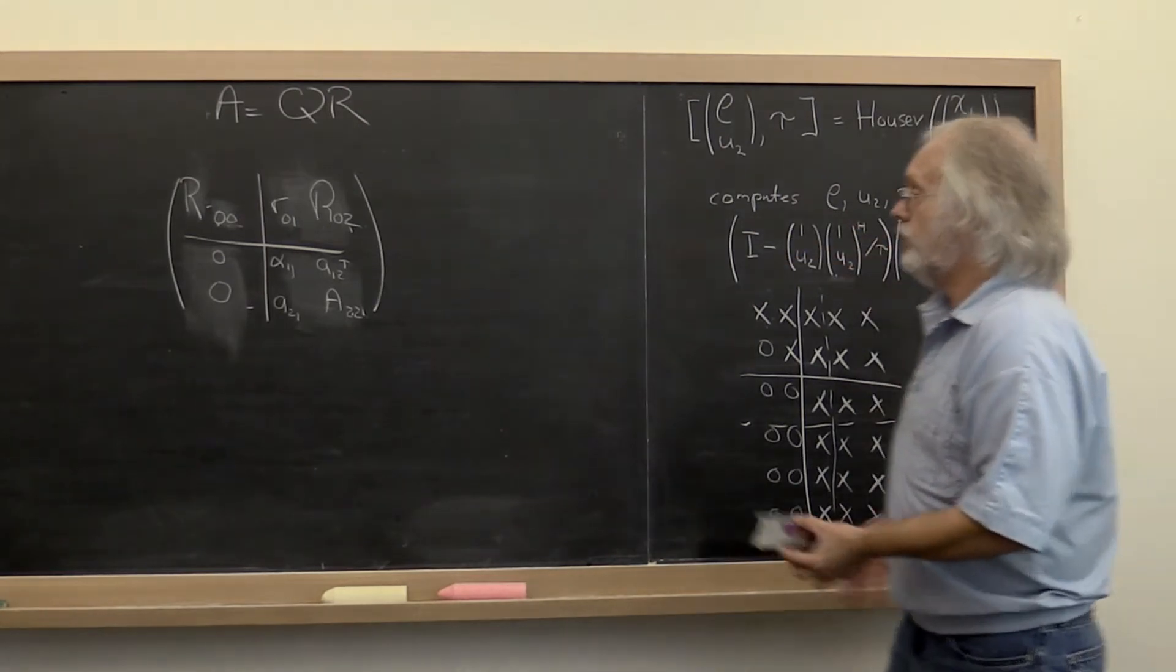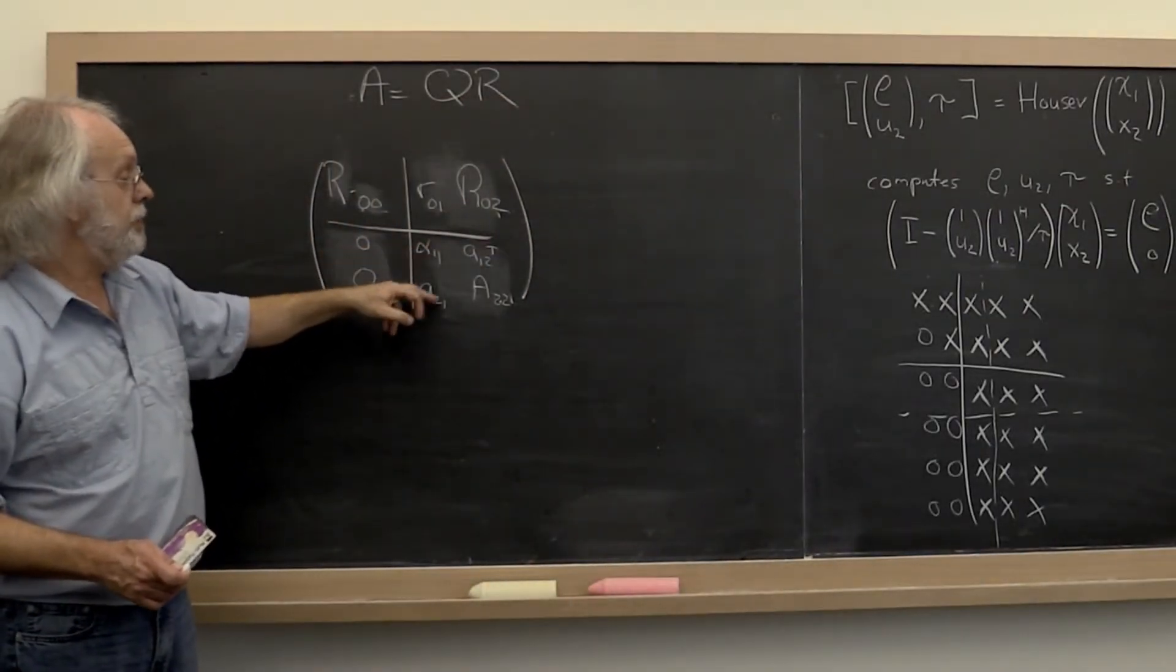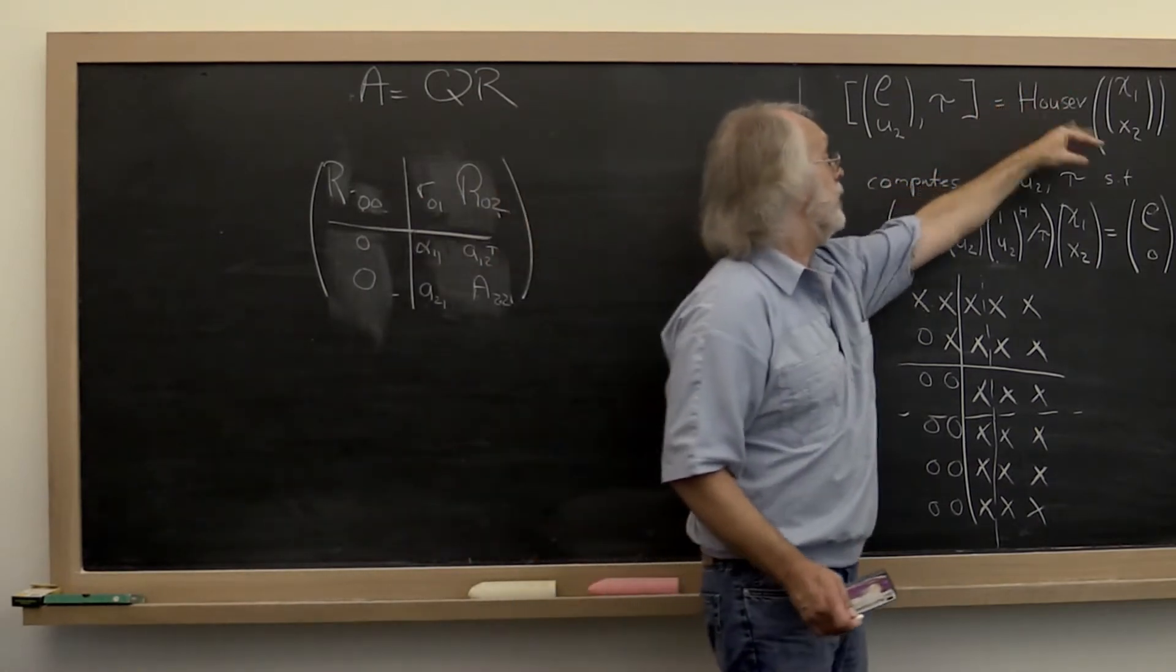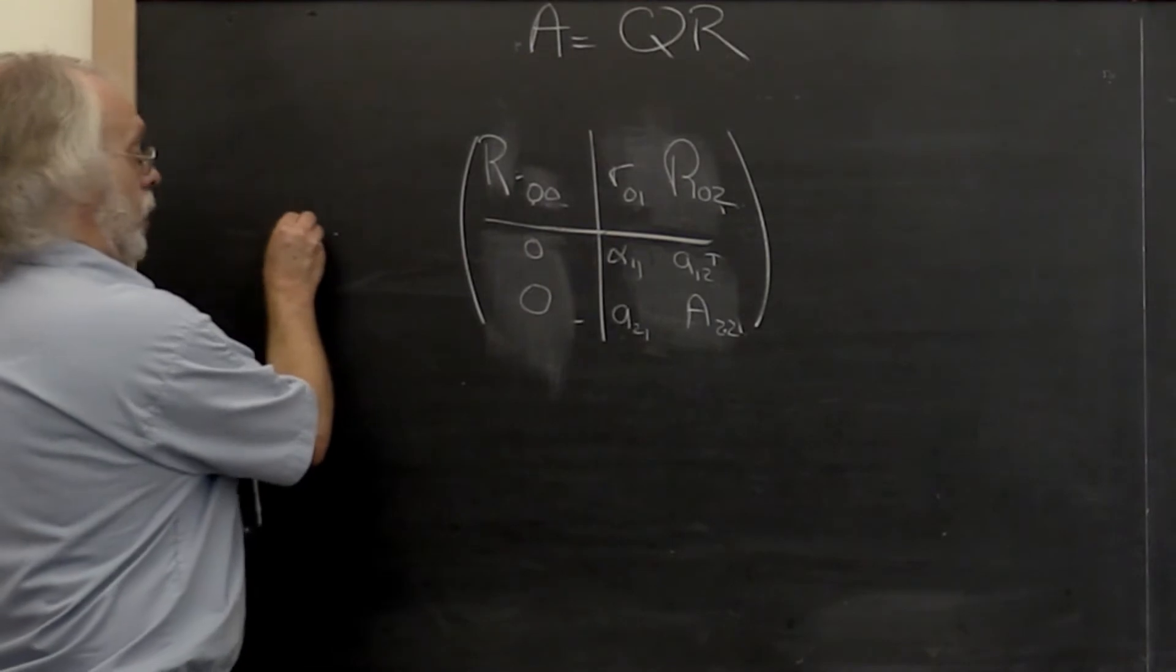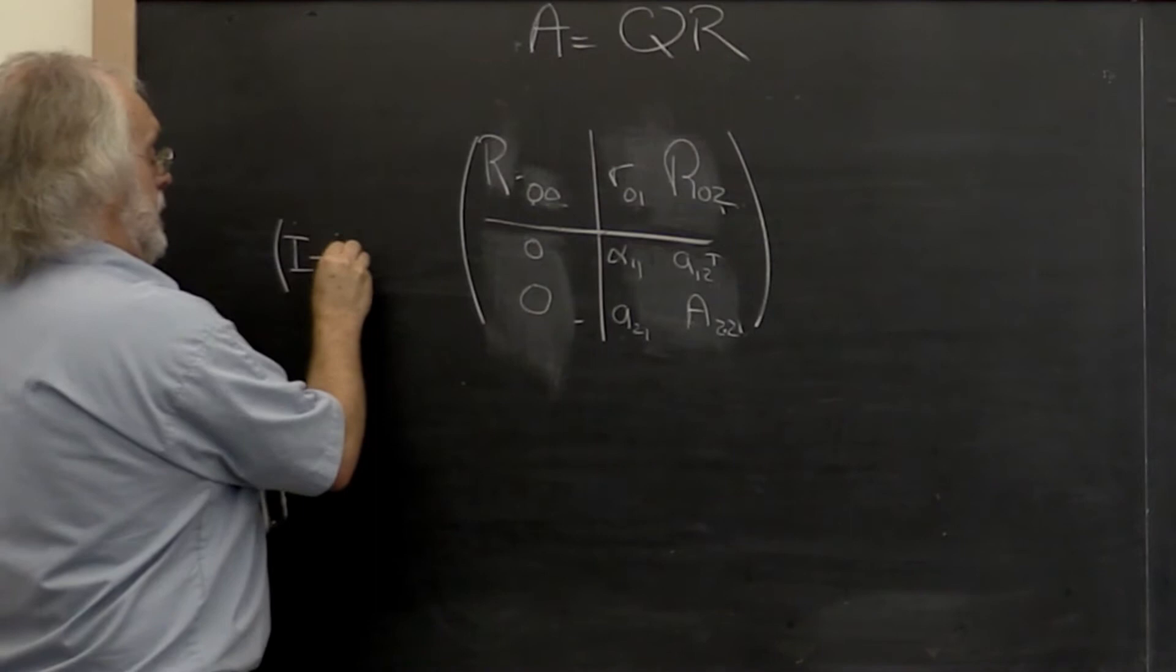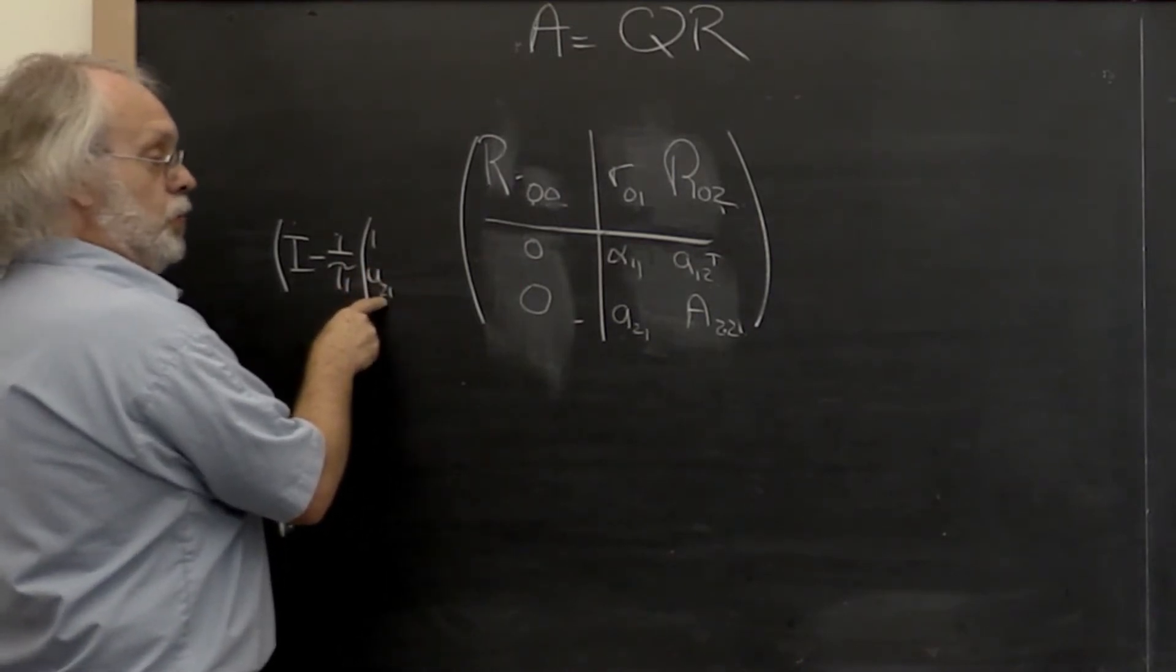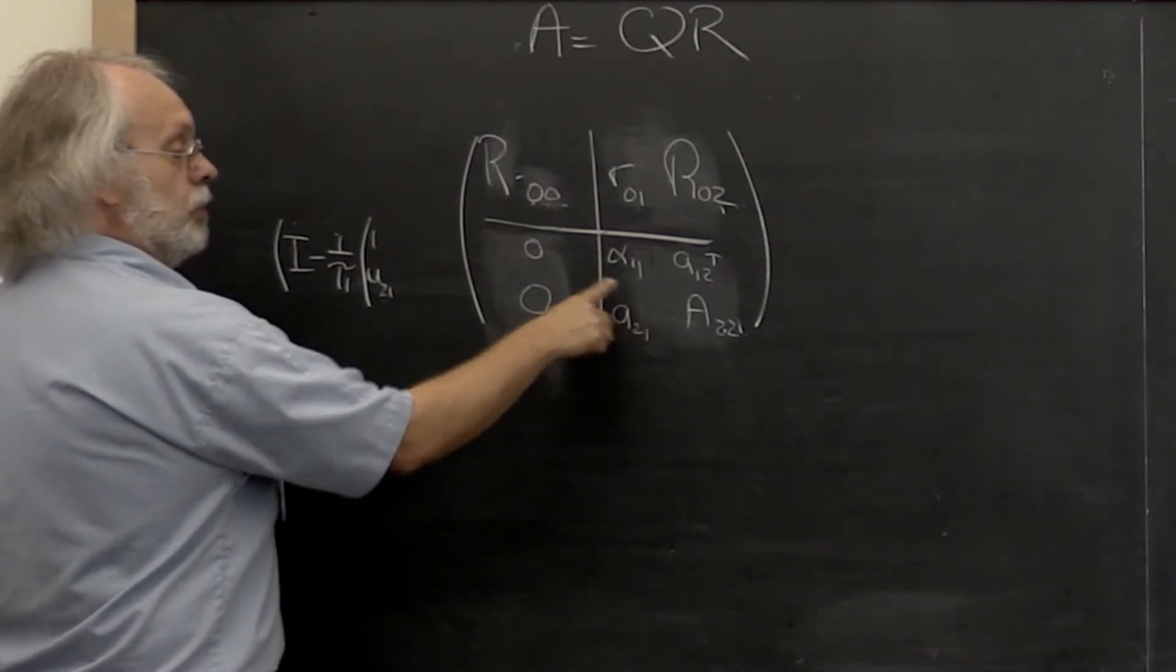So if we go over here we have now exposed this first entry and the rest of the vector from which we compute our Householder vector. And therefore we can take that, we can plug it into our function, we get back this right here. And that gives us all the information for the Householder vector, the Householder transformation. Let's just label this part u21 to recognize that it's computed from a21 and it can overwrite a21.